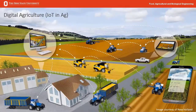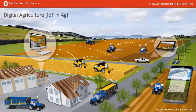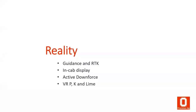That's just kind of my vision, but where reality is beginning to grow today is around digital agriculture. Today I want to talk about four quick technologies: guidance, RTK displays, some comments on active downforce for planters, and then where we're at with variable rate P, K, and lime.